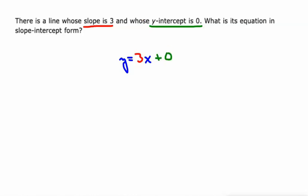But again, if you add zero to three x, you're just going to have three x. So it's really kind of pointless to have that plus zero. Let's just make it y equals three x. So simplify after you put things in.